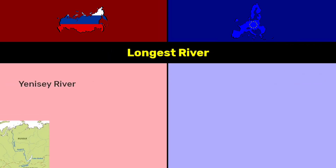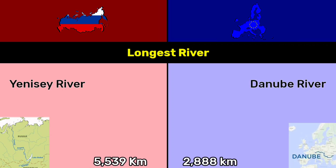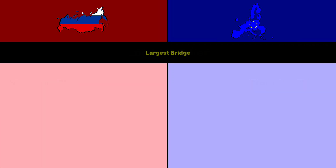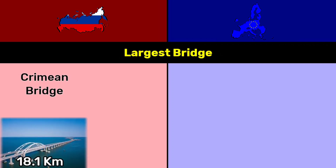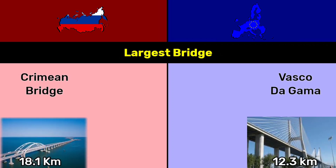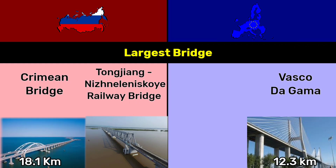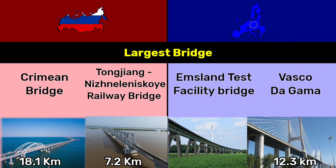Longest river: Russia — Yenisei River at 5,539 kilometers; EU — Danube River at 2,888 kilometers. Longest bridge: Russia — Crimean Bridge at 18.1 kilometers; EU — Vasco da Gama Bridge at 12.3 kilometers. Also noted: Tongzhang Nizhneleninskoye Railway Bridge at 7.2 kilometers, and Emsland Test Facility Bridge at 12 kilometers.